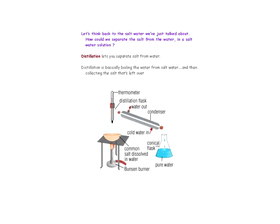How could you separate salt from water in a salt water solution? A process called distillation lets you separate salt from water. Distillation involves boiling the water from the salt water and then collecting the salt that's left over. A condenser allows the water vapor to collect as pure water, and the salt is left behind after the water is boiled off.